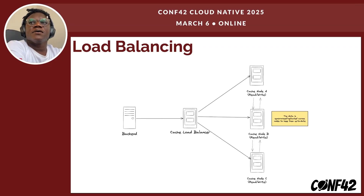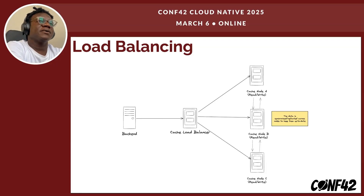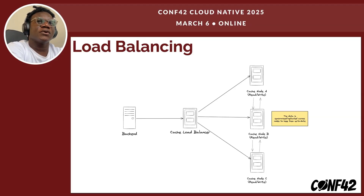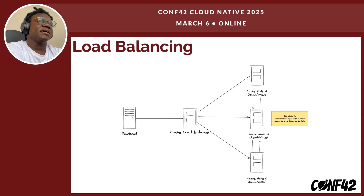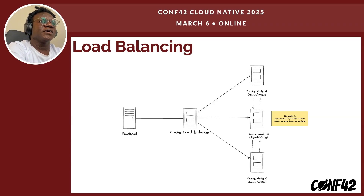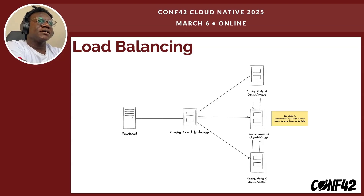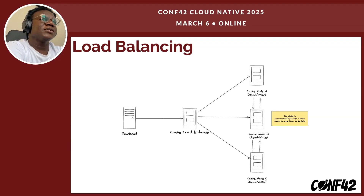Up next, we have load balancing. Load balancing evenly distributes cache requests across multiple cache nodes to prevent overloading a single node, improving response time and ensuring higher availability. In this diagram, we have a cache load balancer responsible for routing requests to the correct node. Data is then synchronized across other nodes — so if we write a value to node A, it gets synchronized to nodes B and C, ensuring that cache data is available on any node for retrieval. A very popular load balancing algorithm is round robin.